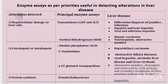Enzyme assays are useful in detecting alterations in liver diseases. For hepatocellular damage, the principal enzyme assays performed are transaminases — AST and ALT, also called SGOT and SGPT respectively. These are used to diagnose liver diseases like differential diagnosis of jaundice.